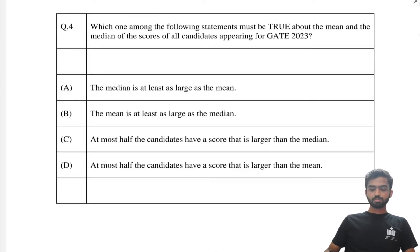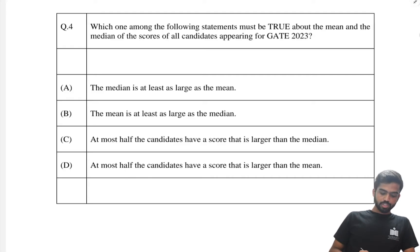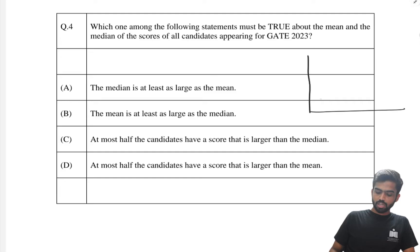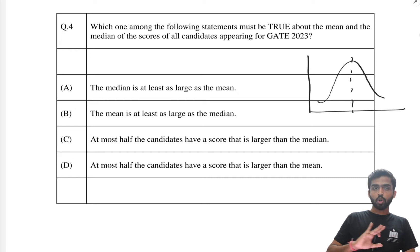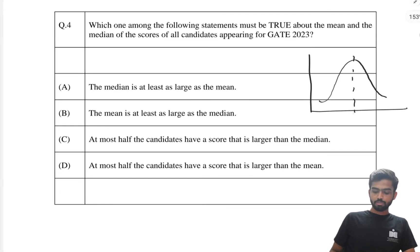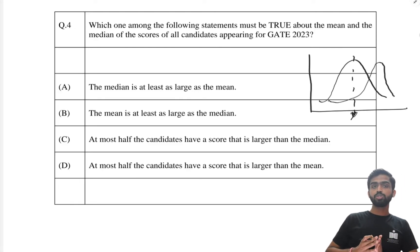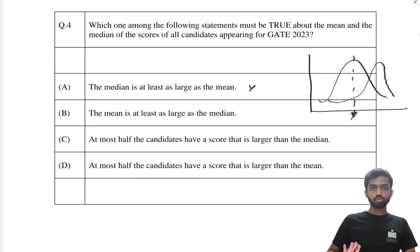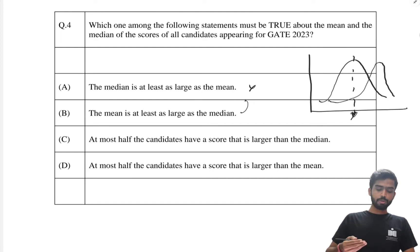The next question asks which statement must be true about the mean and median scores of all GATE 2023 candidates. The median is the middle position when data is sorted; the mean is the average. In a symmetric distribution, mean and median are equal. But in a skewed distribution — like an exam where many students score higher — this relationship breaks. So 'median is at least as large as the mean' is not always true, and neither is its complement.